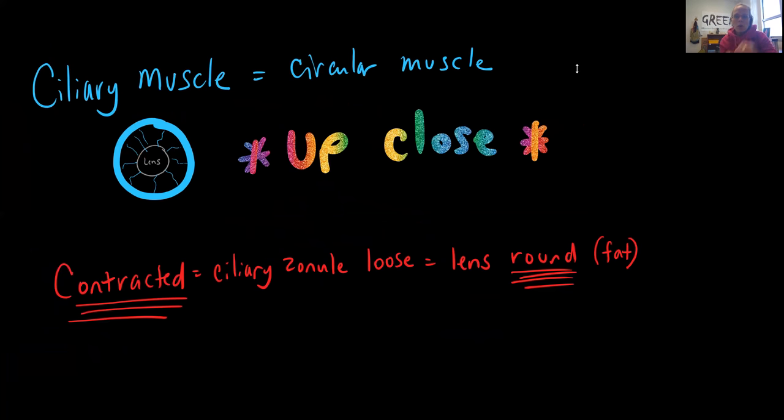So when your ciliary muscle is contracted, the lens is large, it's fat, it's going to bend up those wavelengths of light. So this is great for when you're looking at something up close. So like if you're watching me on your cell phone, then your ciliary muscle is contracted in order to focus your image because you're holding that close to your face type thing.